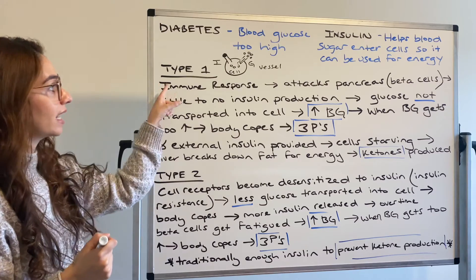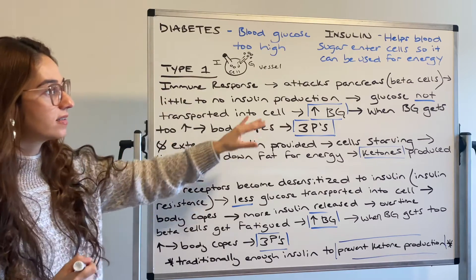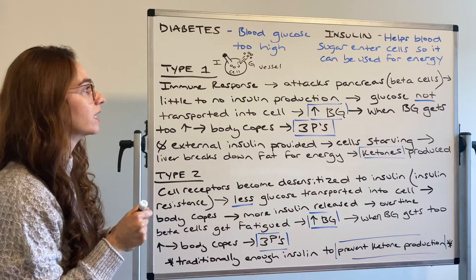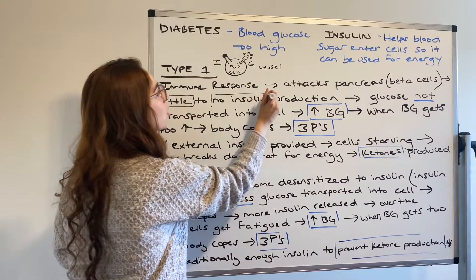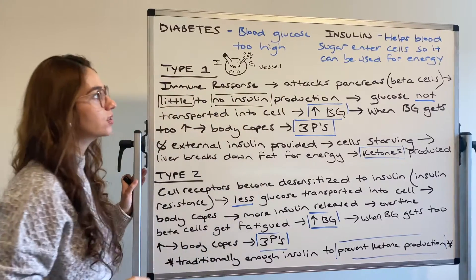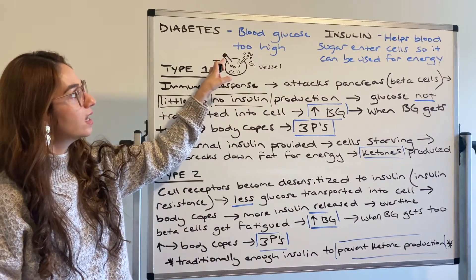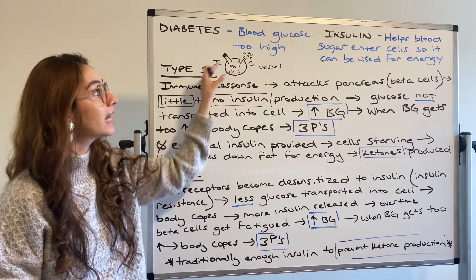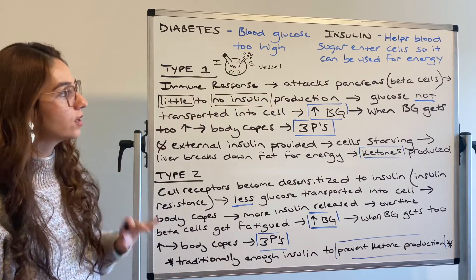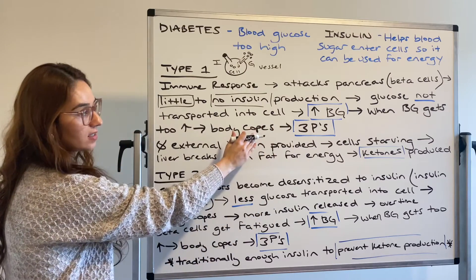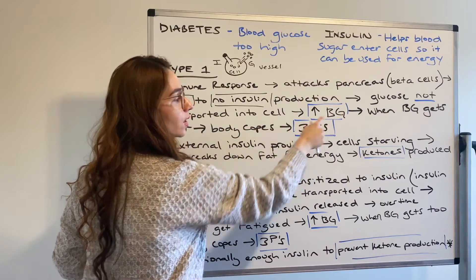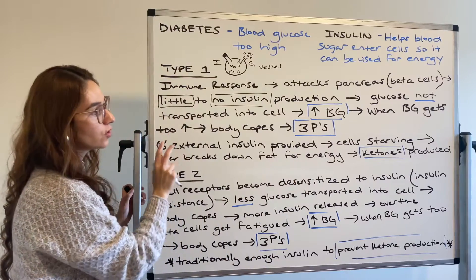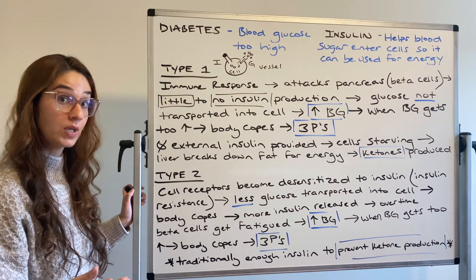In type one diabetes, there's an immune response that attacks your pancreas — and you know that insulin is created in your beta cells. So they have little to no insulin production. If you have little to no insulin, there's no insulin to attach to the insulin receptor in the cell to allow the glucose channel to open. So when you have little to no insulin, glucose is not transported into the cell, and this results in increased blood glucose. Our glucose is in our blood — increased in our blood glucose. And when blood glucose gets too high, the body copes by the three Ps.